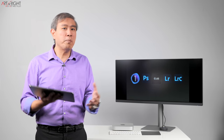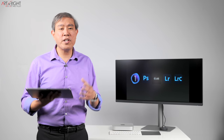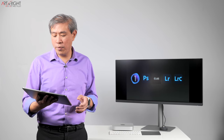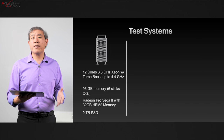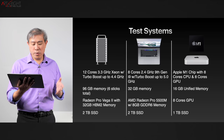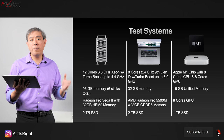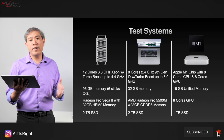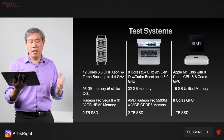And lastly, we're going to look at Photoshop and how it handles small files, and if you do large composites in Photoshop, you're going to find the result very interesting as well. Now let's look at my test systems. I'm using the same three systems as before: my 2019 Mac Pro with 12 cores, 3.3 GHz Xeon, 96 gigabytes of memory, and the Radeon Pro Vega 2 with 32 gigabytes of HBM2.